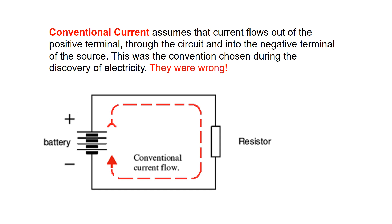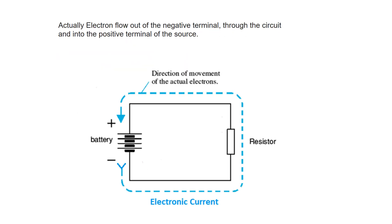The conventional current, however, is assumed to flow out from the positive terminal of the battery and then come into the negative terminal. As we were discussing, the electron flow — the electronic charge or negative charge flow — is from the negative terminal of the battery, going to the positive terminal. That is why this current is called electronic current.